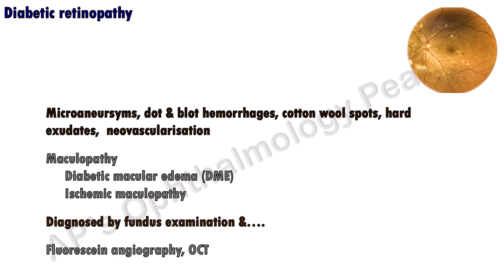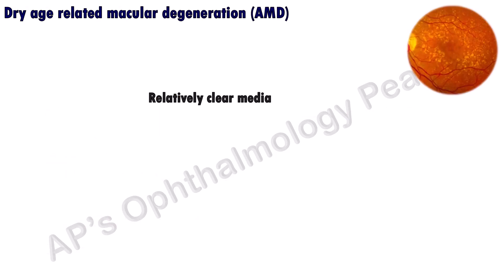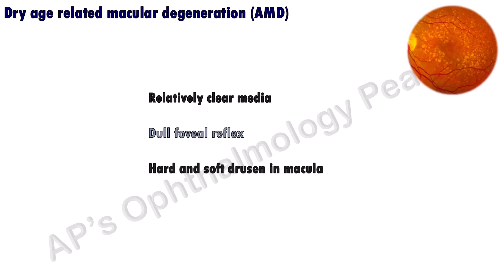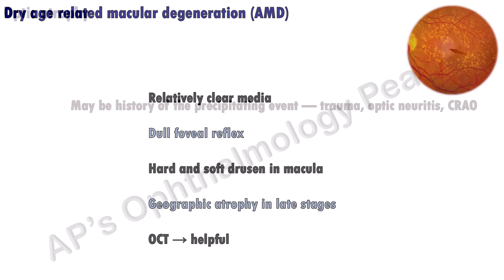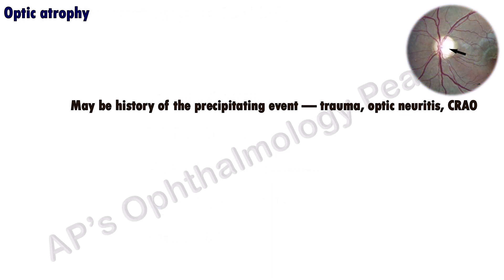In dry age-related macular degeneration, the media is relatively clear in the absence of significant cataractous changes. On fundus examination, the foveal reflex is dull and numerous hard and soft drusen are seen in the macula. Geographic atrophy is seen in the late stages, and OCT is a very helpful imaging modality.